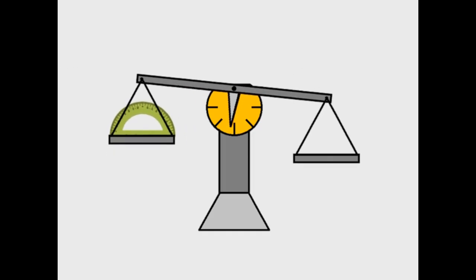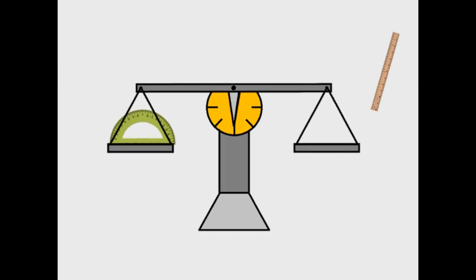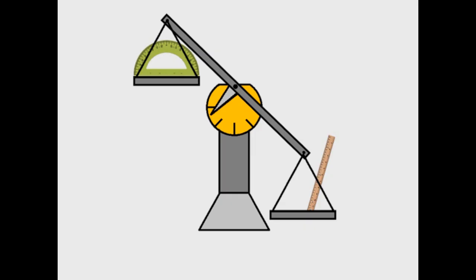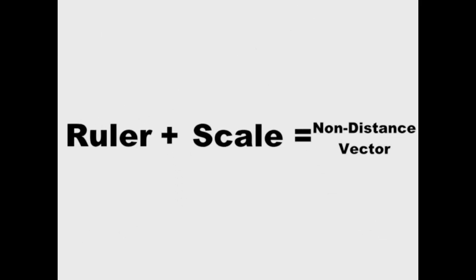For angles, this isn't much of a problem. For magnitude, this is entirely important since you are measuring the length of your vectors with rulers. When dealing with vectors that are not related to distance, you must dictate a scale.